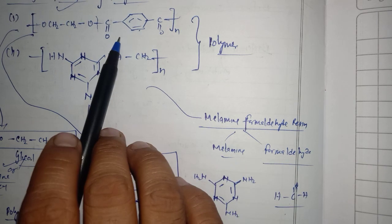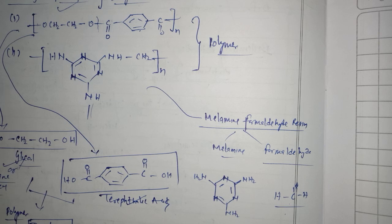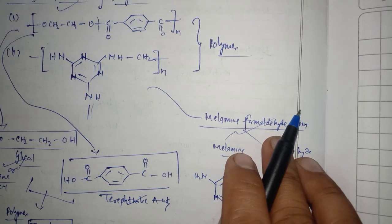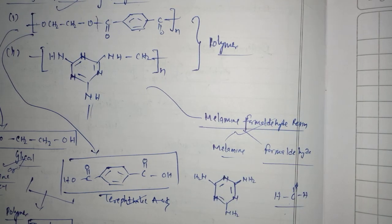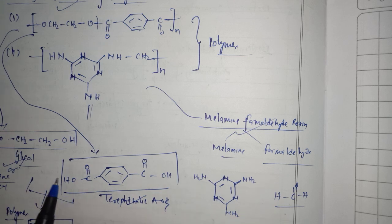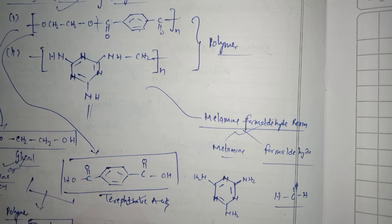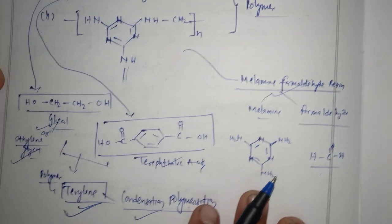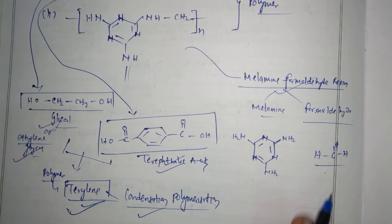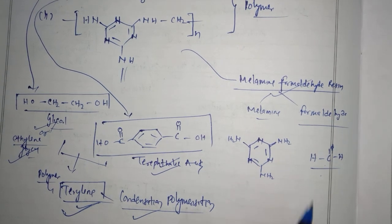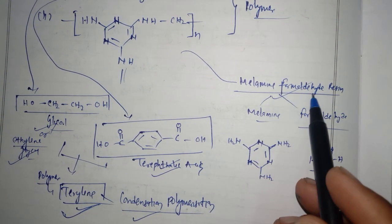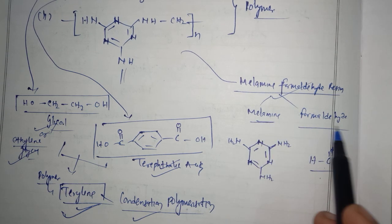So the first structure, the polymer name is terylene, and your second structure polymer name is melamine formaldehyde resin. In the first structure, the polymer named terylene is having monomers called ethylene glycol and terephthalic acid. The second polymer, melamine formaldehyde resin, has monomers melamine and formaldehyde.